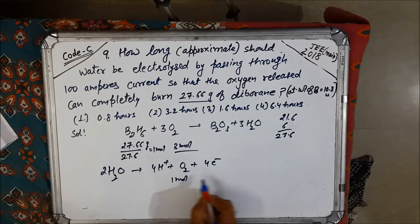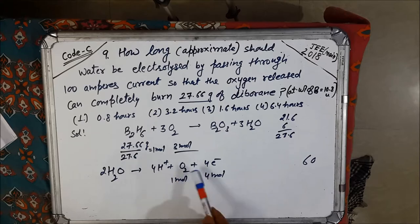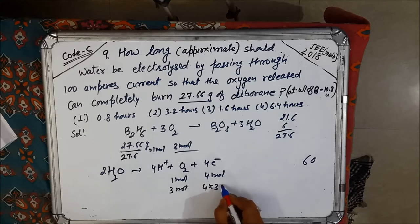That means 1 mole of O2 requires 4 moles of electrons. For 1 mole O2 we require 4 moles of electrons. But we need 3 moles of O2, so to get 3 moles of O2 we require 4 into 3 which is 12 moles of electrons.